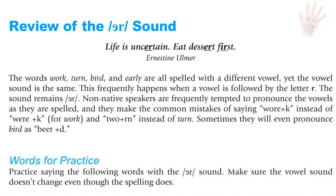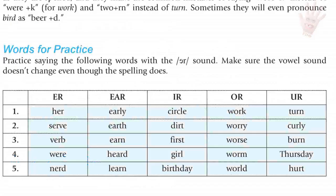Review of the R sound. The words work, turn, bird, and early are all spelled with a different vowel, yet the vowel sound is the same. This frequently happens when a vowel is followed by the letter R — the sound remains UR. Non-native speakers are frequently tempted to pronounce the vowels as they're spelled and make the common mistake of saying 'wark' instead of 'work,' 'toorn' instead of 'turn,' or 'beard' instead of 'bird.' You will hear five words at a time, each with a different spelling but the same UR sound — spelled in this order: ER, EAR, IR, OR, and UR.